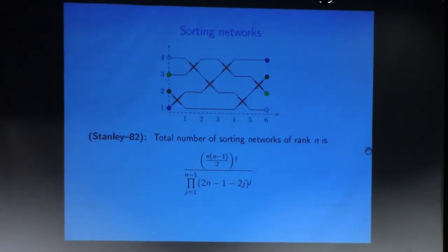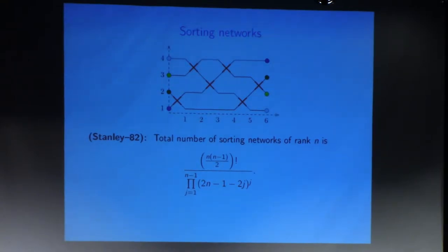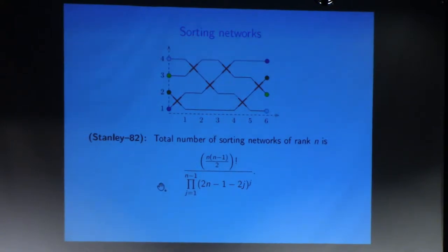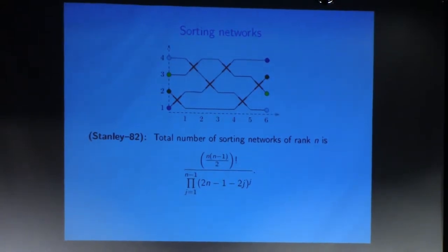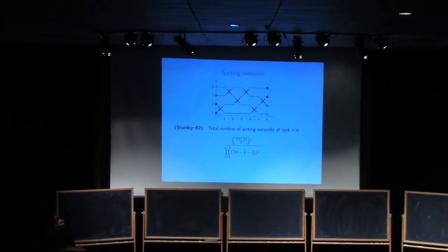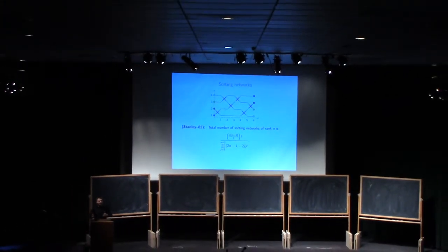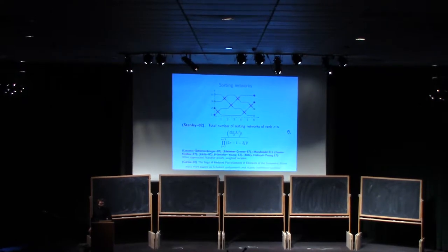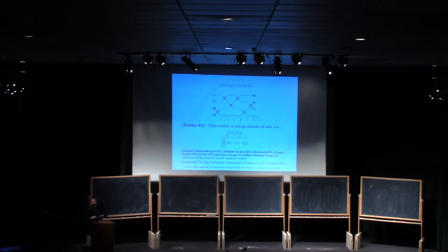There are many beautiful mathematical results about sorting networks. About 35 years ago, Richard Stanley was interested in how many sorting networks there are, and he found a very nice formula as a product of factorials. This sparked many projects studying sorting networks and beautiful mathematics around them, mostly in algebraic combinatorics, where people were counting different things, finding bijective proofs of enumerative results, and developing weighted versions.